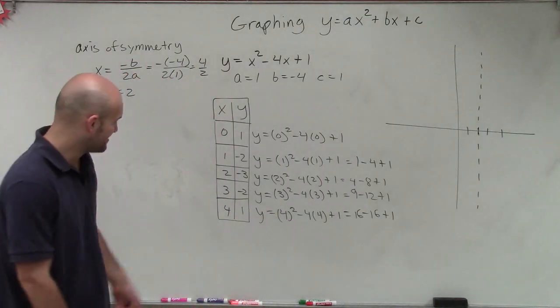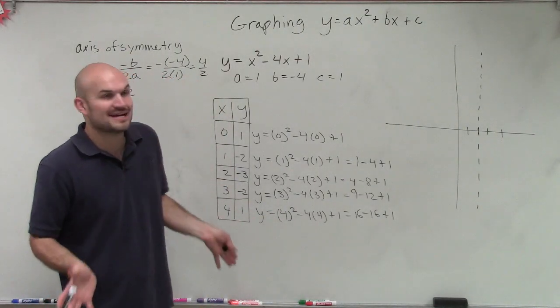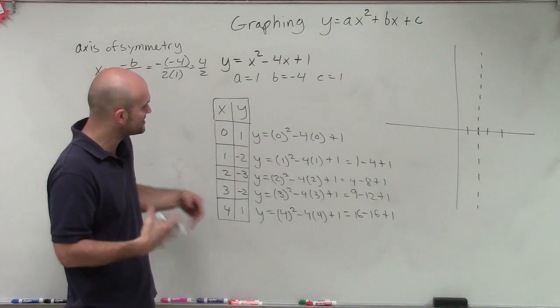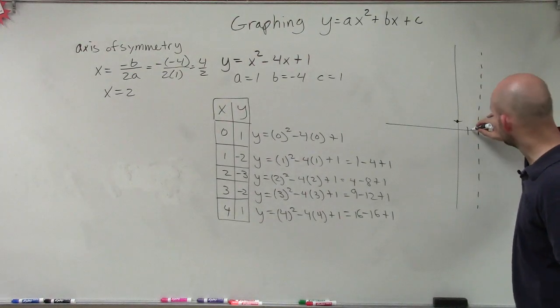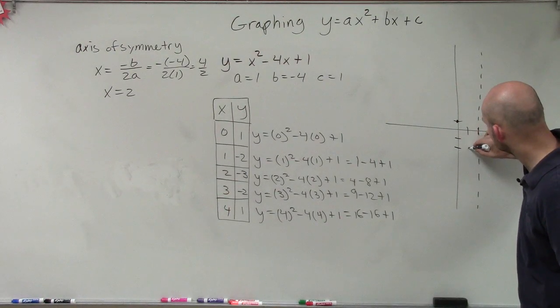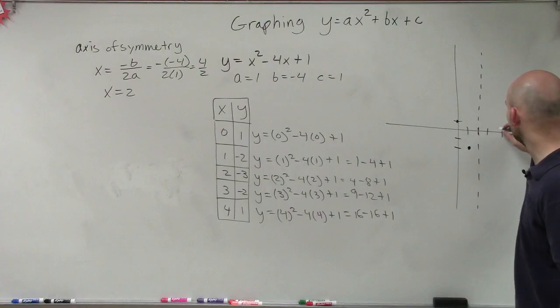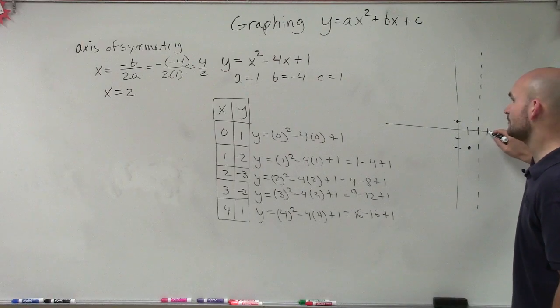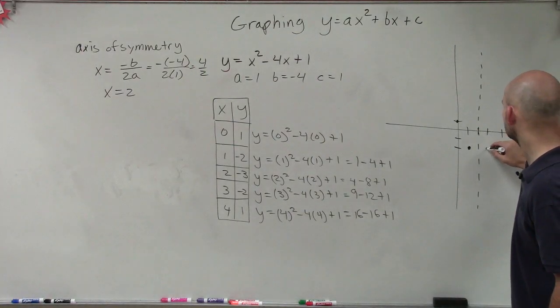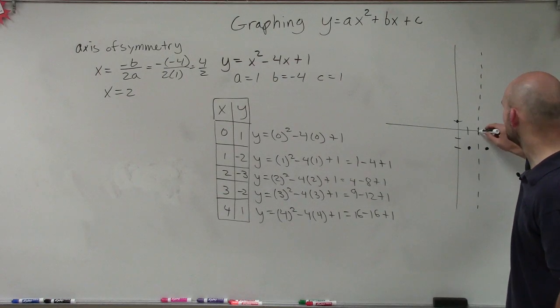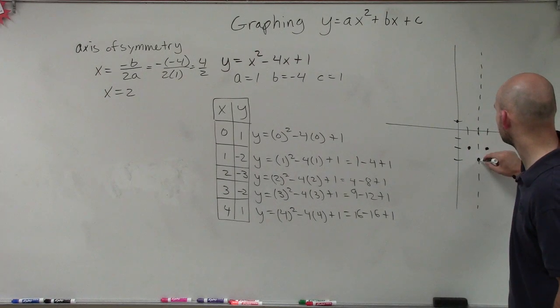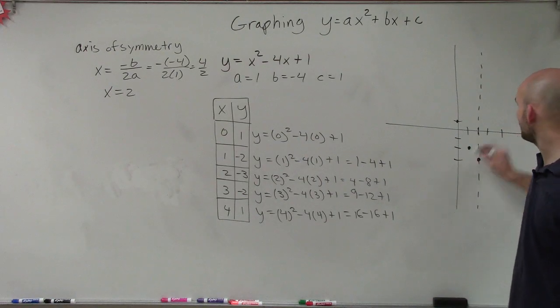So there you go. You can now see that we're going to use this axis of symmetry. But let's still plot all four of these points. We have 0 comma 1, then 1 comma negative 2, then 3 comma negative 2, and 2 comma negative 3, and then 4 comma 1.